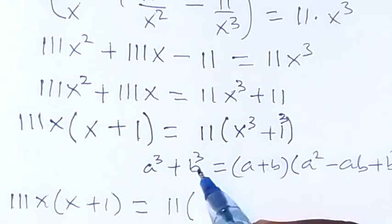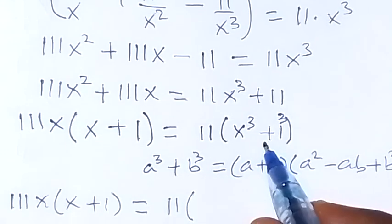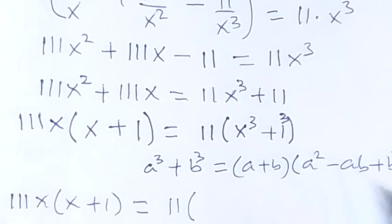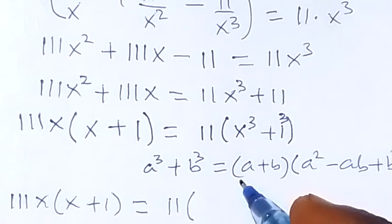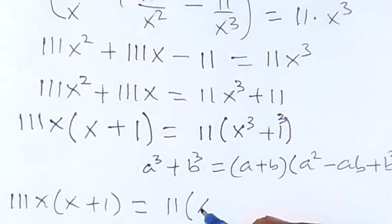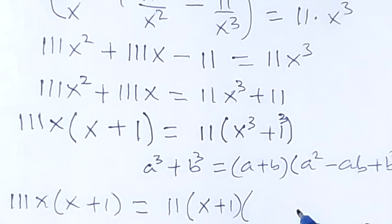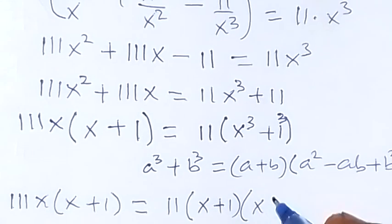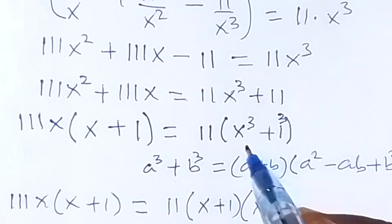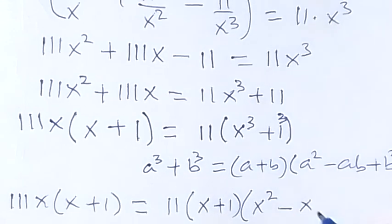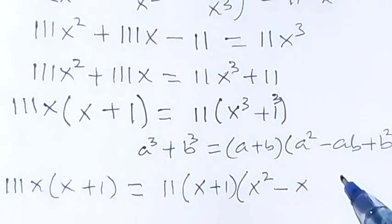Writing x³ + 1³ in the factored format, we get (x + 1) — that's a plus b — times x squared minus x times 1, which is minus x, plus 1 squared, which is plus 1.